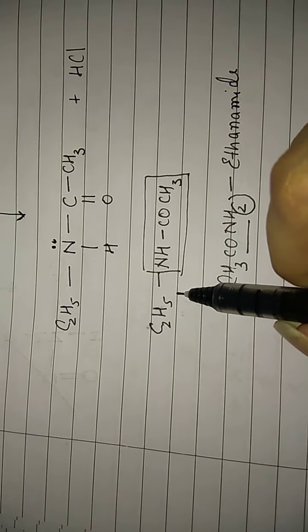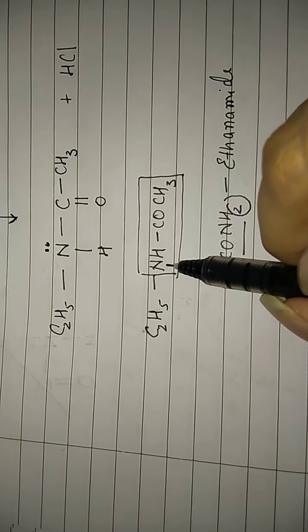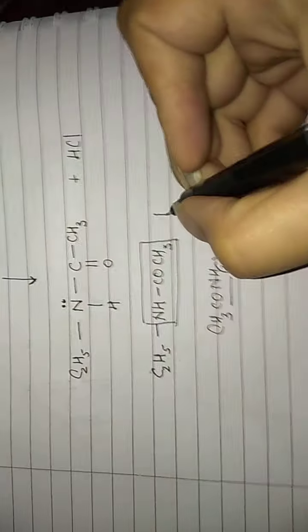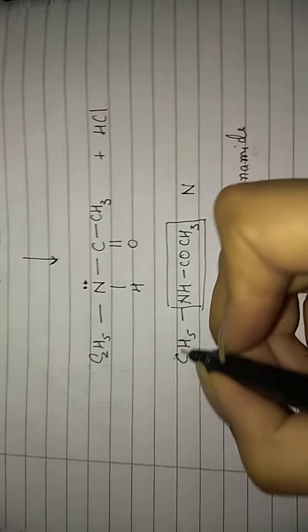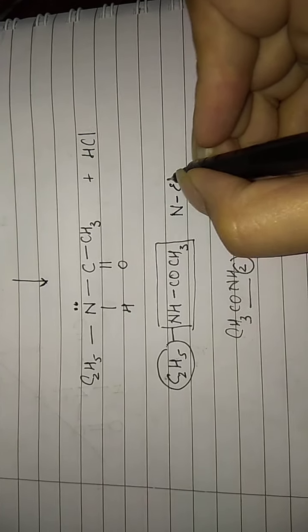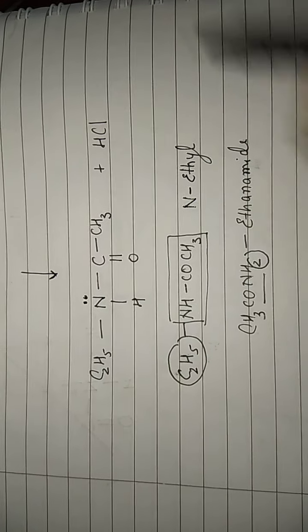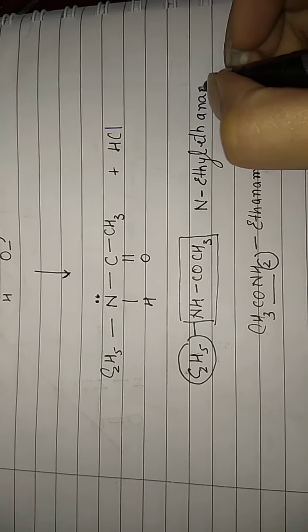But if you see, one hydrogen atom of ethyl amide has been substituted by the ethyl group. This ethyl group is present on the nitrogen atom, so I will write it as N-ethyl, and what is my main chain? Ethanamide. So I will call it N-ethyl ethanamide.